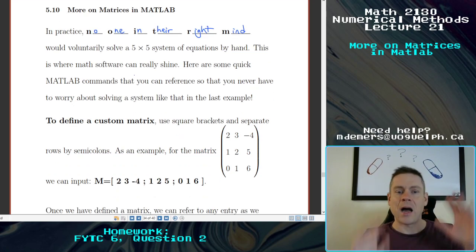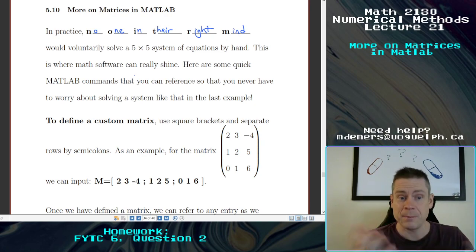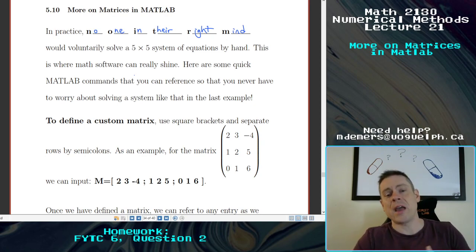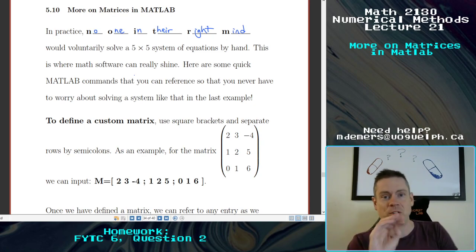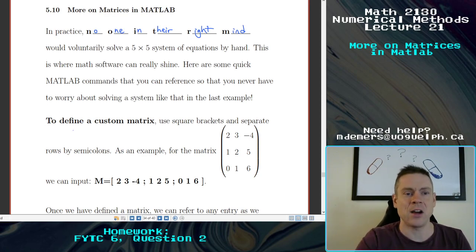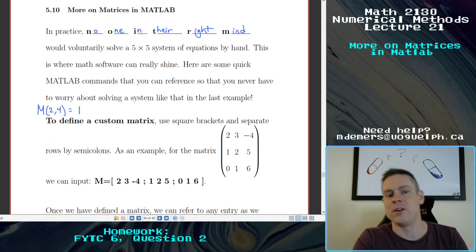So let's see. I want to talk about some commands that MATLAB has that you can use in reference, so you never have to worry about solving a system like that. We introduced a couple of basics when it came to matrices with that divided difference scheme from a couple of lectures ago. We talked about how you can define things like M(2,4) equals one to assign one entry of a matrix the number one, and have all the rest in the corresponding square matrix equaling zeros.